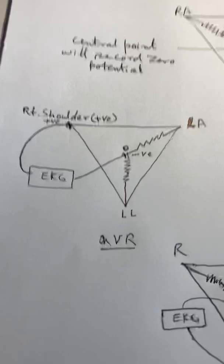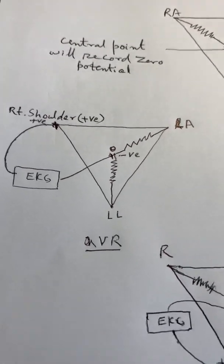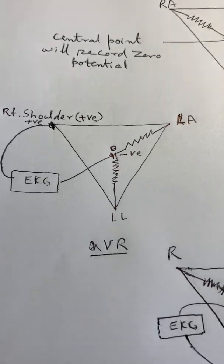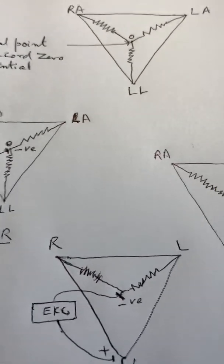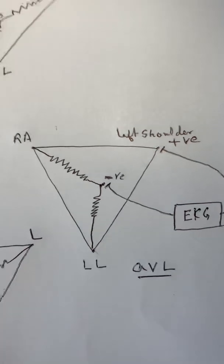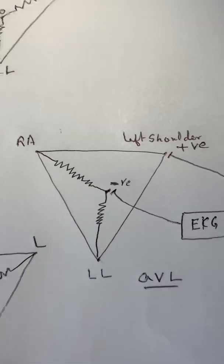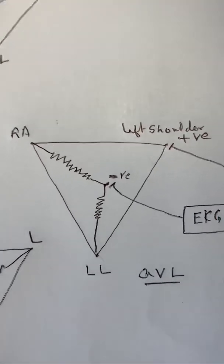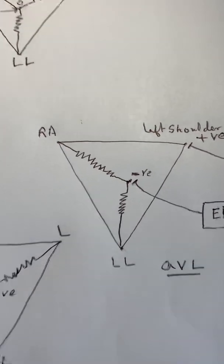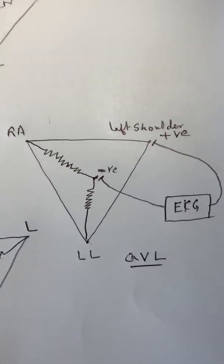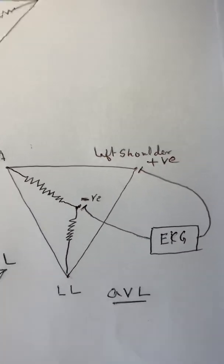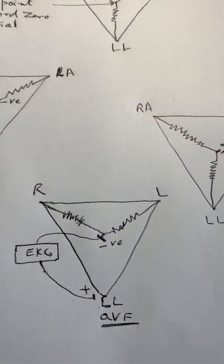Right shoulder is positive, and the center electrode is negative but recording zero. So you are only recording changes from the right shoulder. The same applies to AVL: the left shoulder is positive, the center is negative and records zero. The center is an indifferent electrode, so here again we are recording only from the left shoulder, which is why we call it AVL.